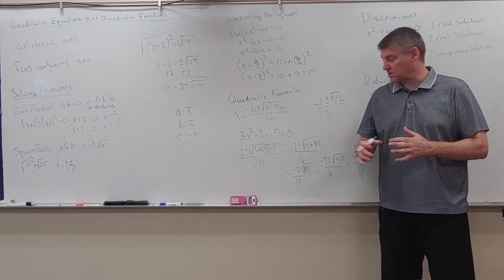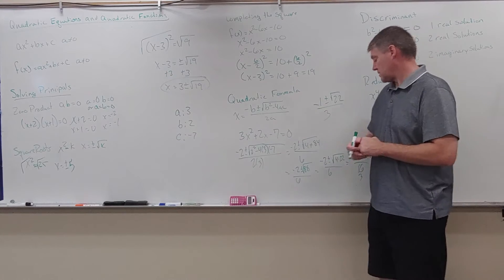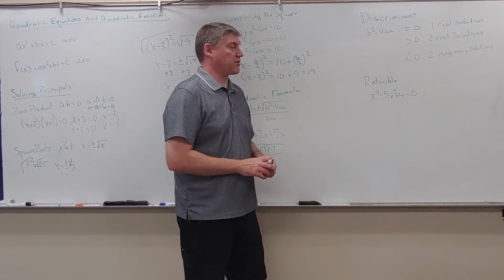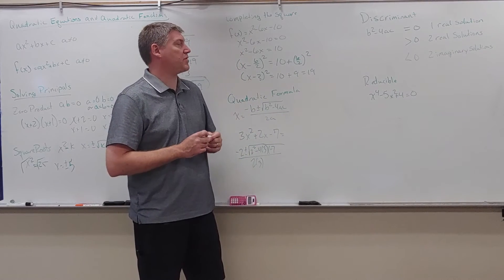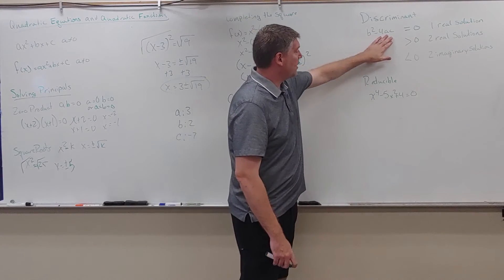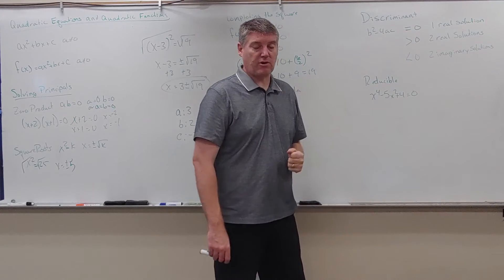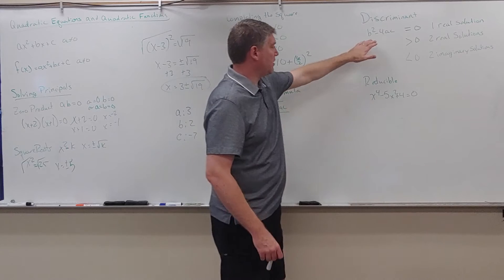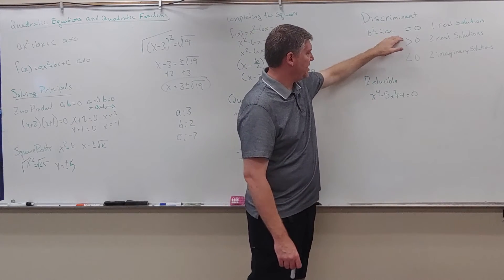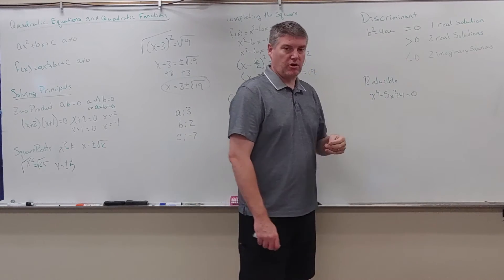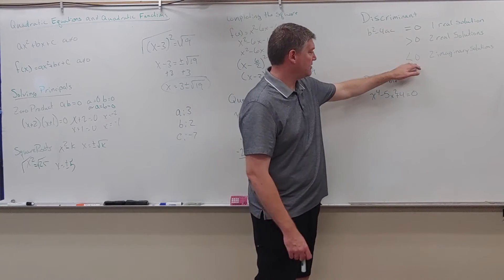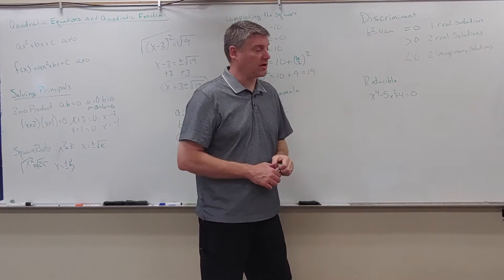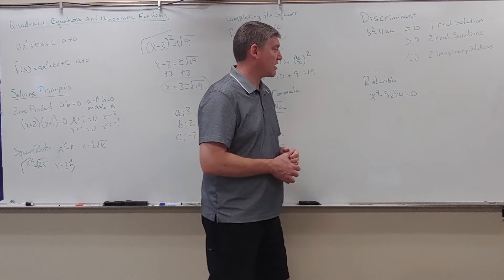Now let's talk briefly about the discriminant. The discriminant is the piece inside the square root: b squared minus 4ac. If b squared minus 4ac equals zero, I have one real solution. If it's greater than zero, I have two real solutions. If it's less than zero, I have two imaginary solutions — those are complex numbers and the solutions are complex conjugate pairs.